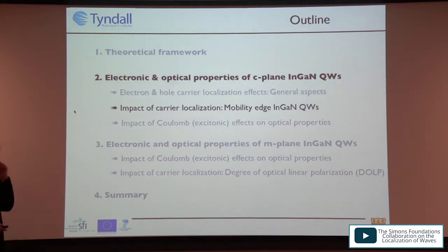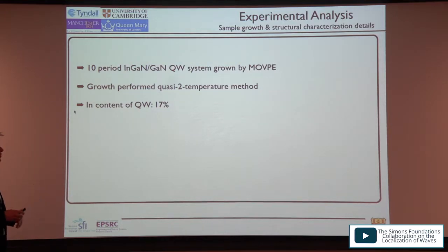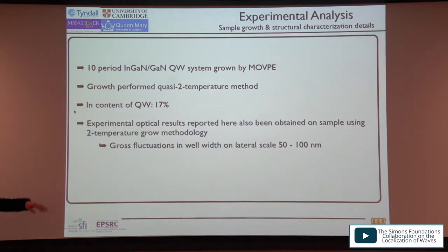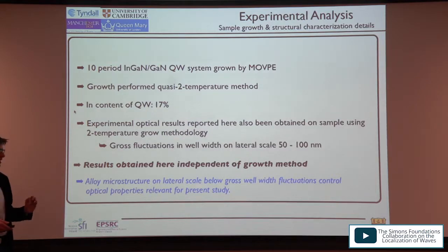Now on carrier localization effects and the mobility edge: this is joint work with Cambridge and Manchester and also Queen Mary College London. InGaN quantum wells were grown by MOVPE in Cambridge using a quasi-two-temperature method, with approximately 17% indium content. Two different growth settings were used, producing well-width fluctuations of the order of 50–100 nm. Since the results were independent of the two structures, the conclusion was that the alloy microstructure on the lateral scale below these well-width fluctuations is responsible for the observed behavior.